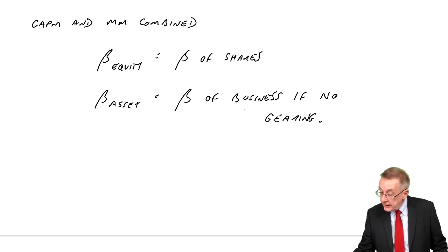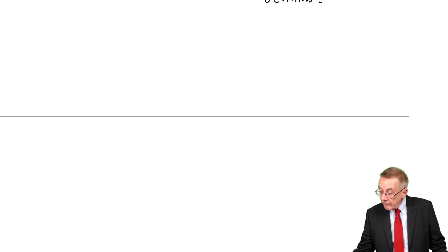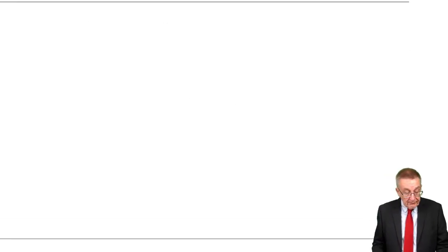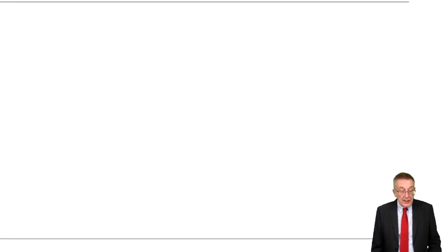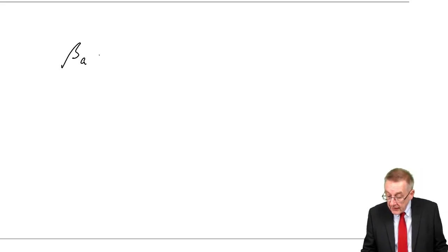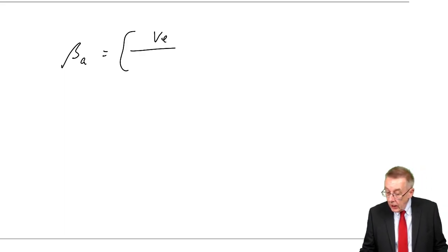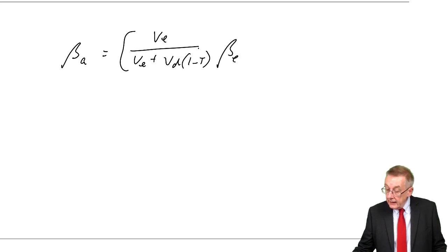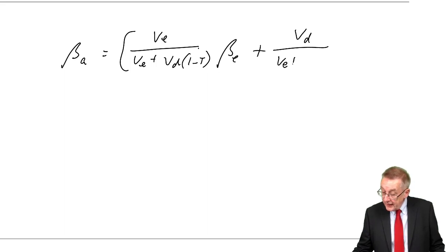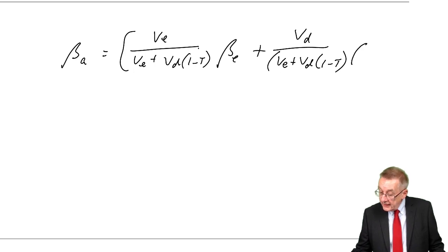There is a formula relating the two together, which looks awful. It's given on the formula sheet. BA equals VE over (VE plus VD(1 minus T)) times beta E, plus VD over (VE plus VD(1 minus T)) times beta D.